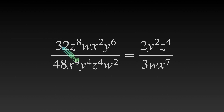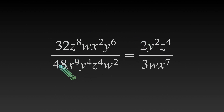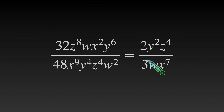Let's go ahead and use 16, since that's the greatest common factor. 32 divided by 16 is 2, and 48 divided by 16 is 3. Had you divided by 2, 4, or 8, you would have needed additional simplification steps to get to 2 thirds.